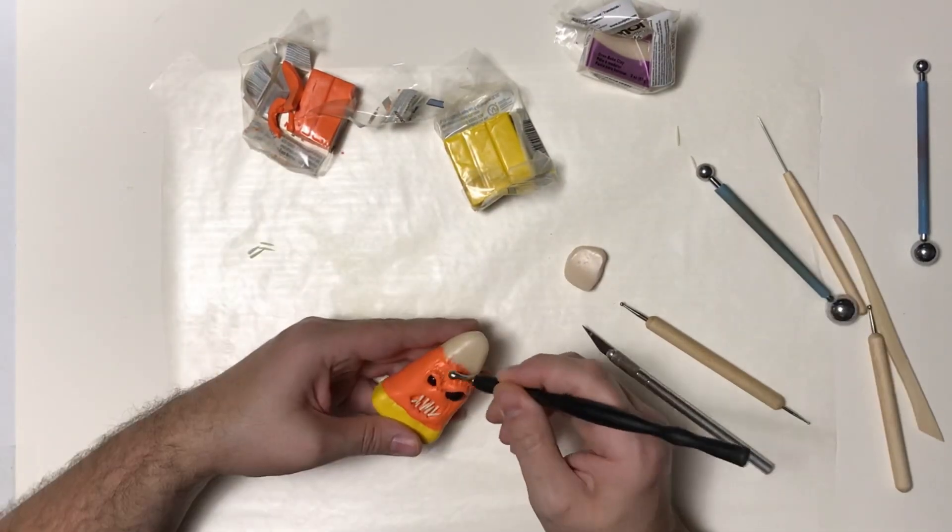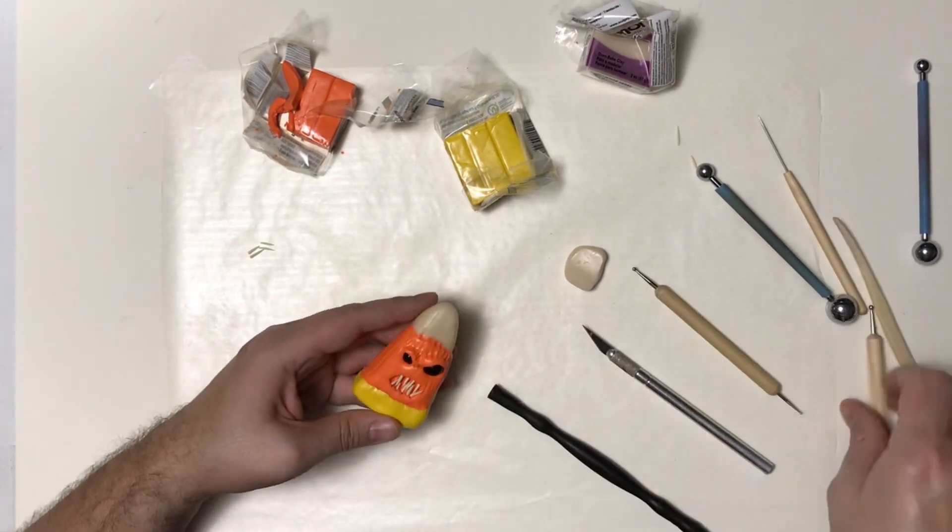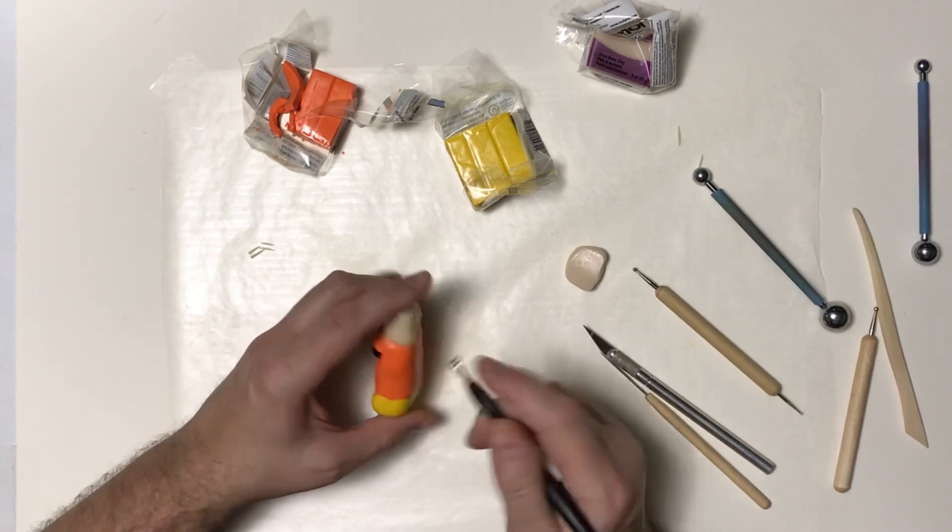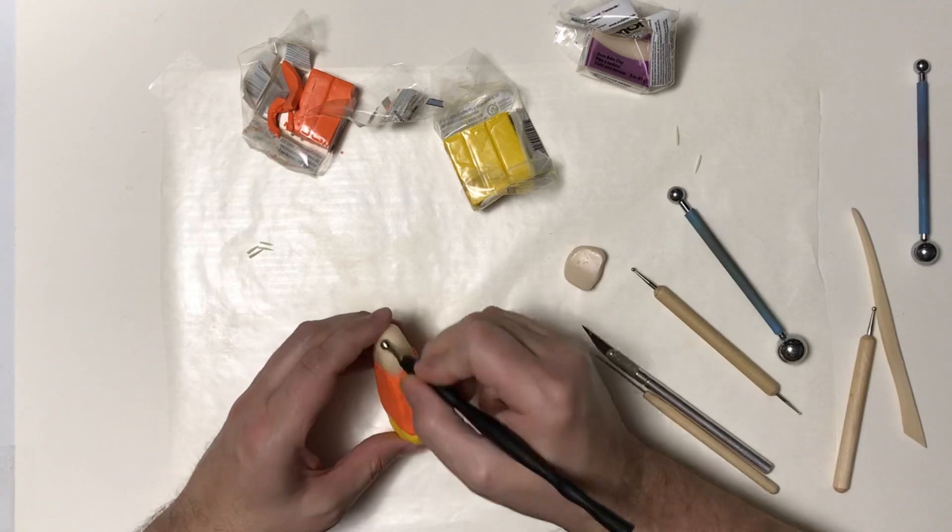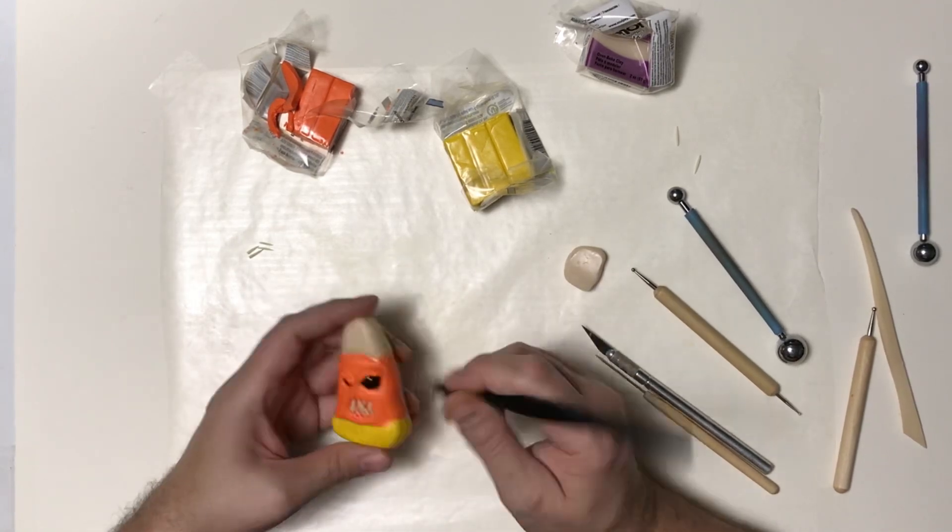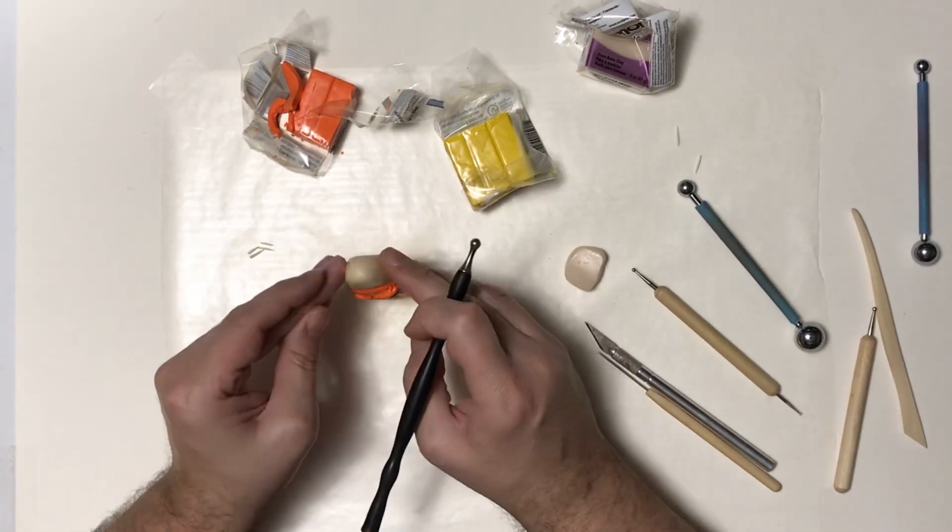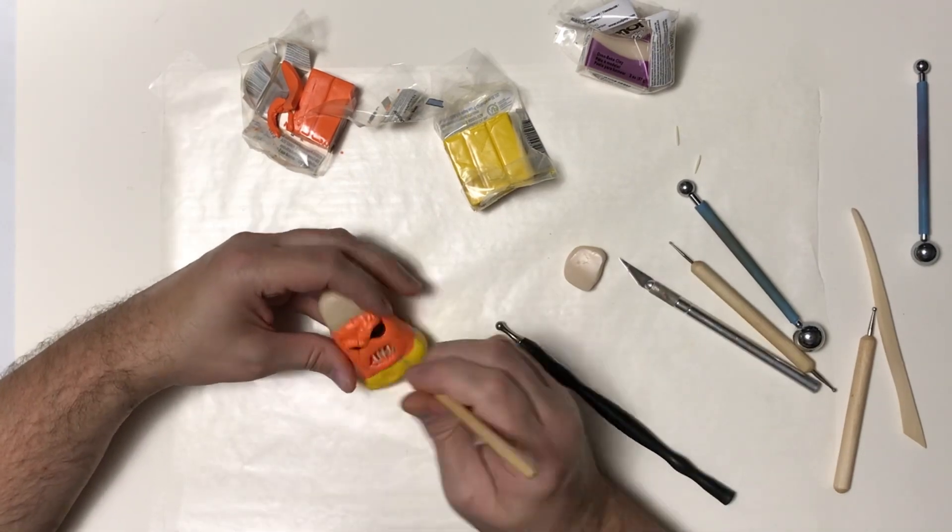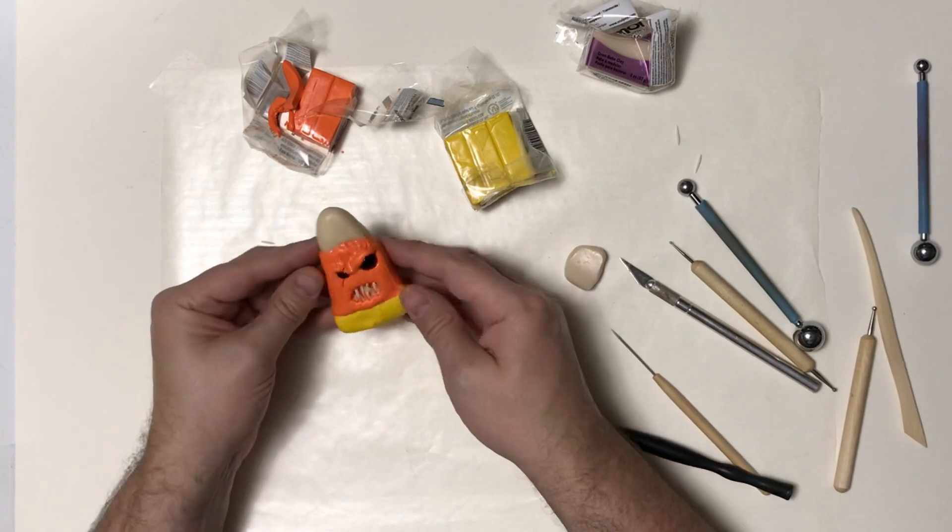And the last thing I'm going to do is use my ball tool and my needle tool to just go over the entire piece—smooth it out some and add some texture. When you look at a piece of candy corn, it's not very perfect. They're a pretty cheap little candy, but they definitely have a certain look, so I wanted to try to replicate that the best I could with this candy corn monster. And once I was happy with the sculpt, I decided to add a scar over his right eye with my needle tool, and he'll be ready to be baked.